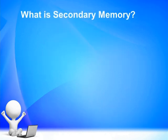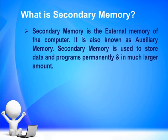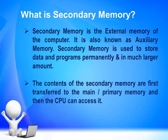Let's start with secondary memory. What is secondary memory? Secondary memory is the external memory of the computer. It is also known as auxiliary memory. Secondary memory is used to store data and programs permanently and in much larger amounts. The contents of secondary memory are first transferred to the main memory or primary memory, and then the CPU can access it. That means the CPU cannot access secondary memory directly.